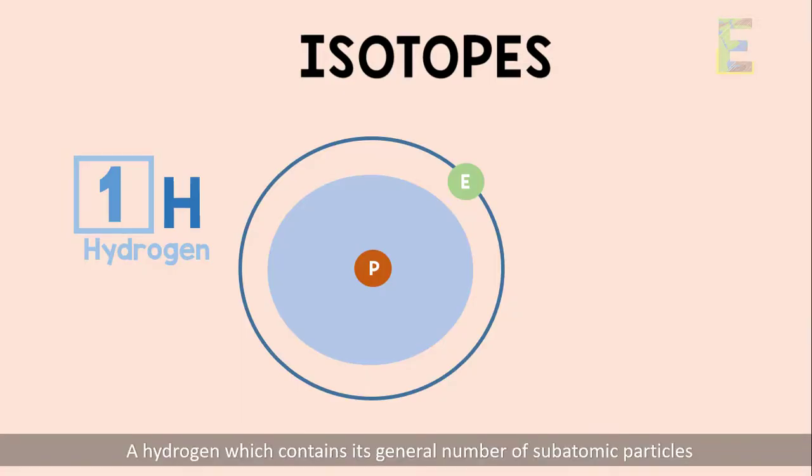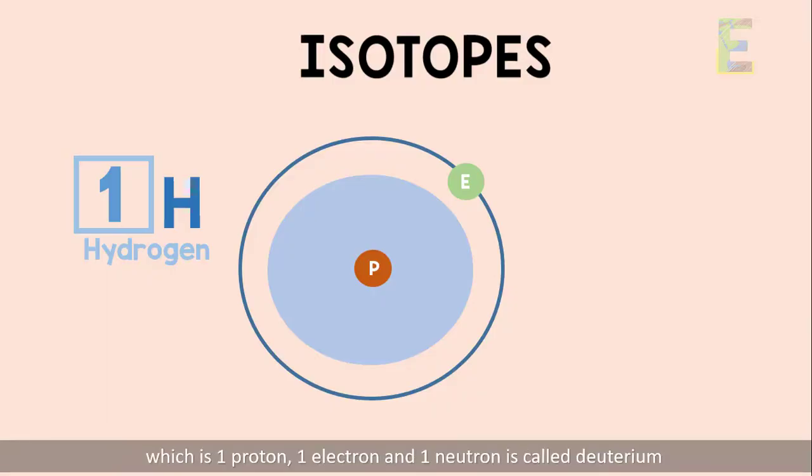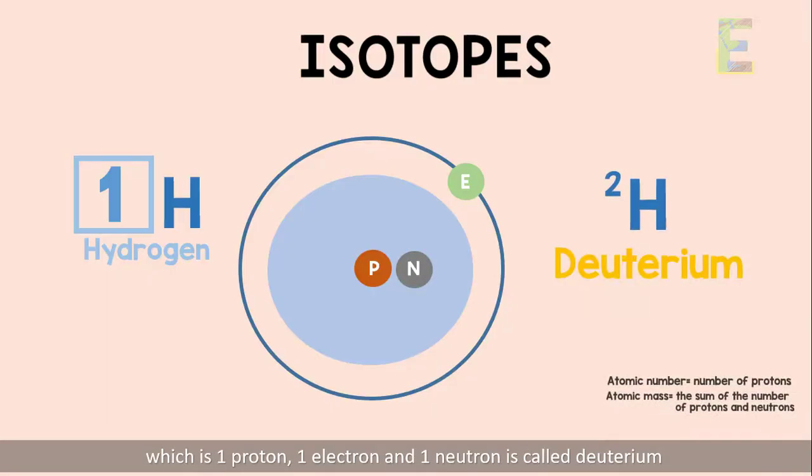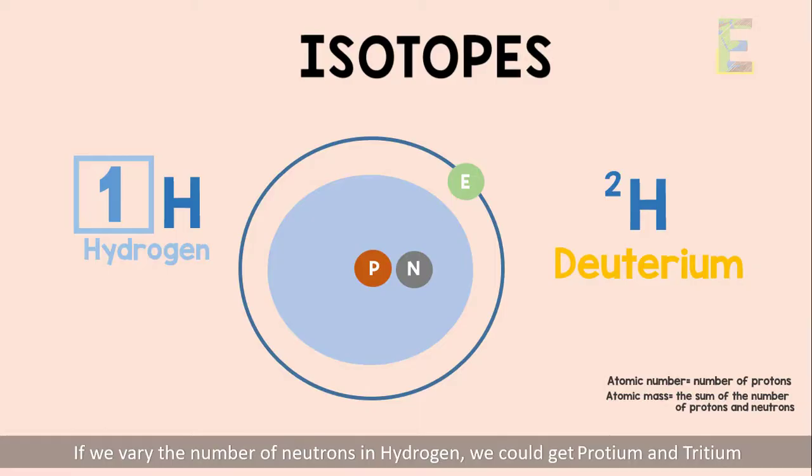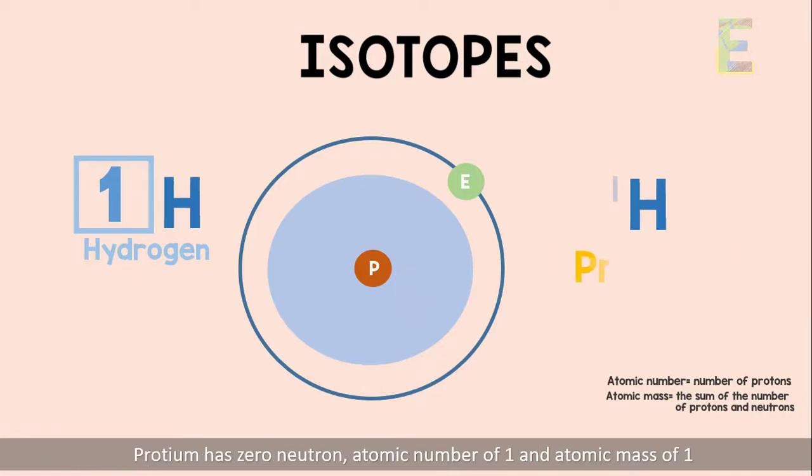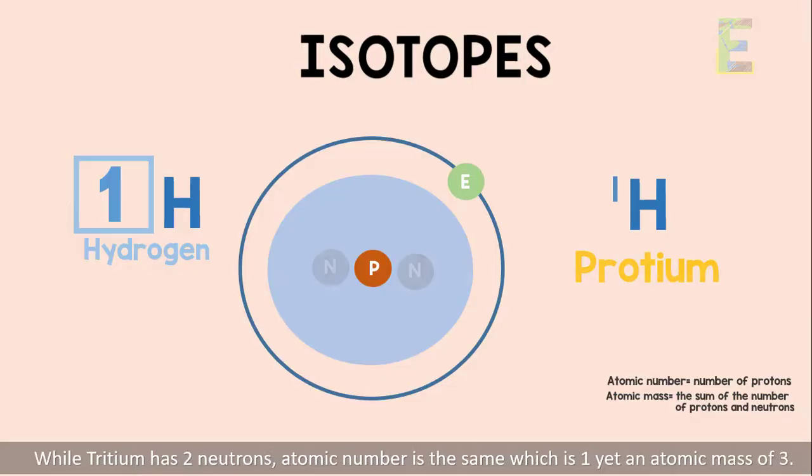A hydrogen which contains its general number of subatomic particles which is one proton, one electron, and one neutron is called deuterium. Deuterium has an atomic mass of two and atomic number of one. If we vary the number of neutrons in hydrogen, we could get protium and tritium. Protium has zero neutron, atomic number of one, and atomic mass of one. While tritium has two neutrons, atomic number is the same which is one, yet an atomic mass of three.